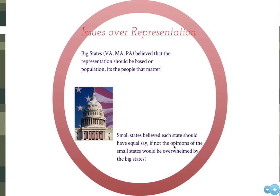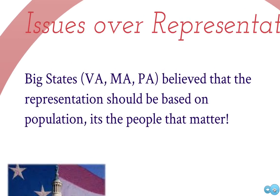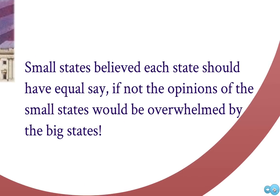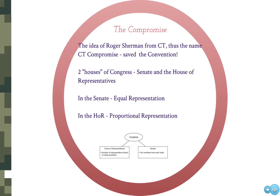Imagine living in a small state with only one or two votes while a big state would have lots of votes — it could cause problems for your state. There was a fundamental disagreement: big states wanted proportional representation based on population, while small states believed each state should have equal say no matter its size. There were about equal numbers of small and large states, and no way to solve this issue unless somebody gave in. No one gave in, so a compromise was needed — someone was going to have to give something up.